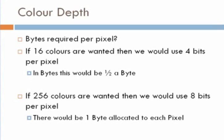256 colors are wanted when we would use 8 bits per pixel. So 2 to the power of 8 equals 256. So therefore, 8 bits is 1 byte. So therefore, 256 colors, you could say, 256 colors means that there's 1 byte allocated to each pixel. 1 byte to each pixel, i.e. 8 bits. 8 bits in a byte.